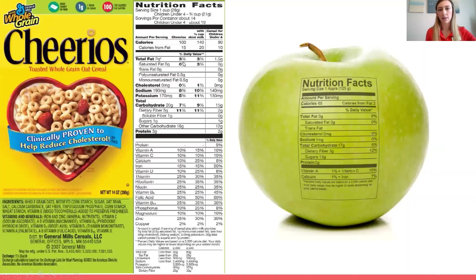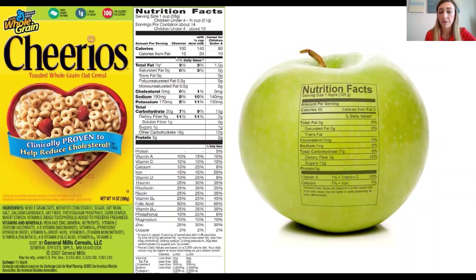Here is another example of nutrition facts. You can see the serving is one cup, and servings per container are about 14. Cheerios has 100 calories; with a half cup of skim milk, it's 140. Calories from fat is 15, which is pretty low. Saturated fats — zero. Trans fats — zero. Then cholesterol, very low.